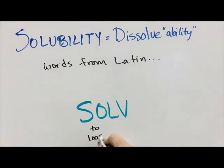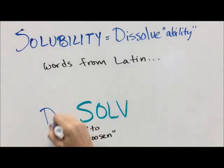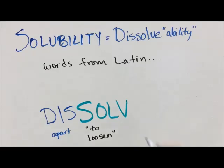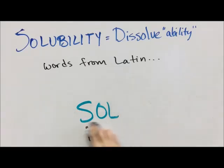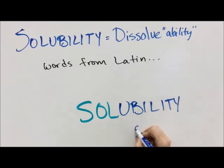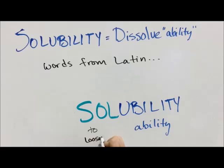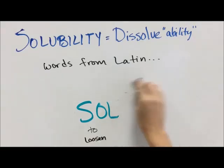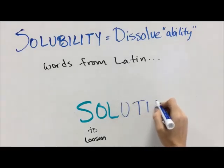Solve in Latin means to loosen. So when you dissolve something, the word 'dis' means apart. So you're literally loosening apart all of the particles inside of that substance — that's what dissolve means. Solubility means the ability to loosen, so some substances have the ability to loosen the particles inside of them apart within another substance. That is their solubility.